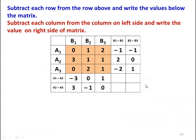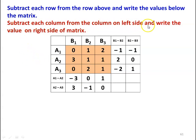Now we solve the game by the matrix method. We repeat the matrix. For the matrix method, subtract each row from the row above and write the value below the matrix. A1 minus A2: (0−3)=−3, (1−1)=0, (2−1)=1. A2 minus A3: (3−0)=3, (1−2)=−1, (1−1)=0. Similarly, subtract each column from the column on the left and write the value on the right side of the matrix. B1 minus B2: (0−1)=−1, (3−1)=2, (0−2)=−2. B2 minus B3: (1−2)=−1, (1−1)=0, (2−1)=1. These are all the oddments for the matrix.